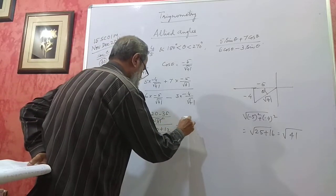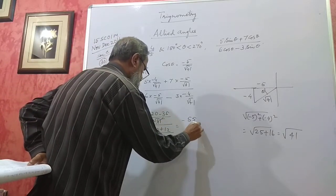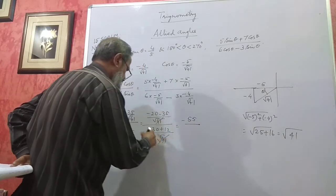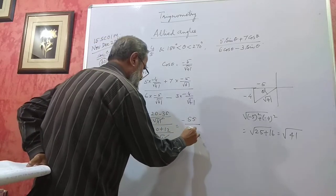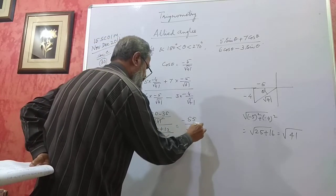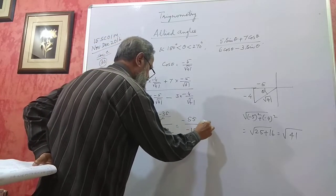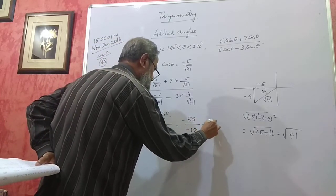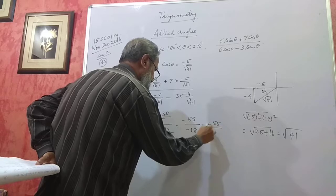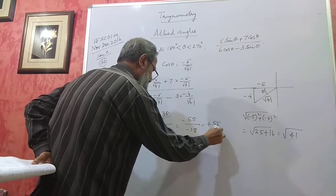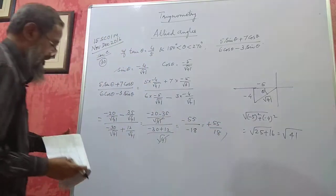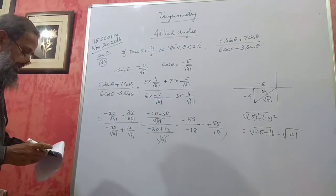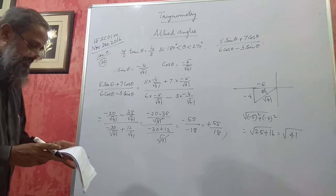Minus 55 divided by minus 18 gives 55/18. This carries 6 marks.